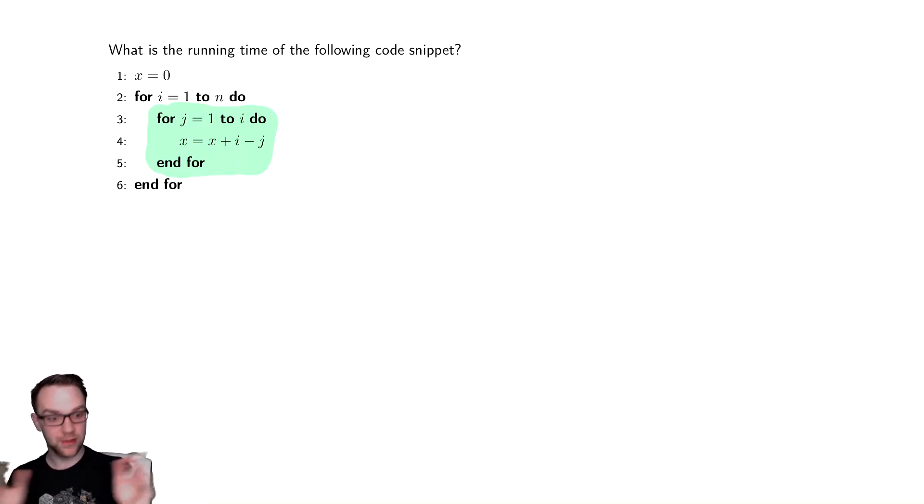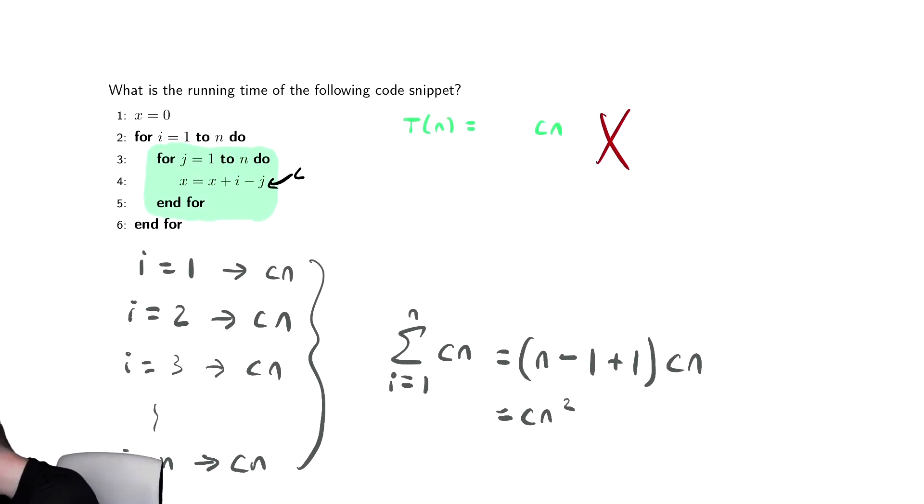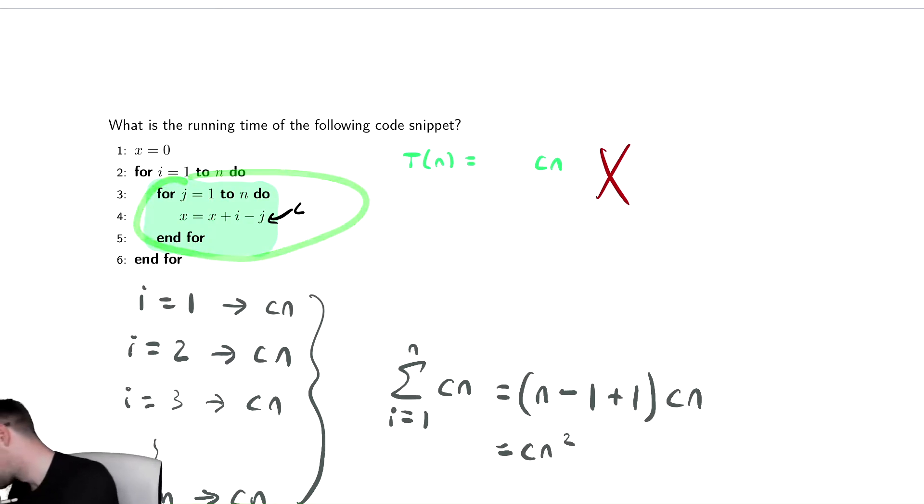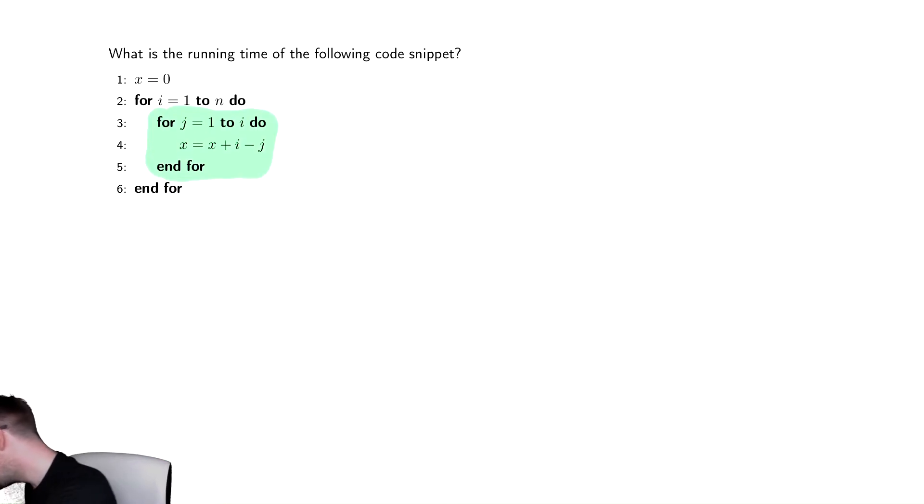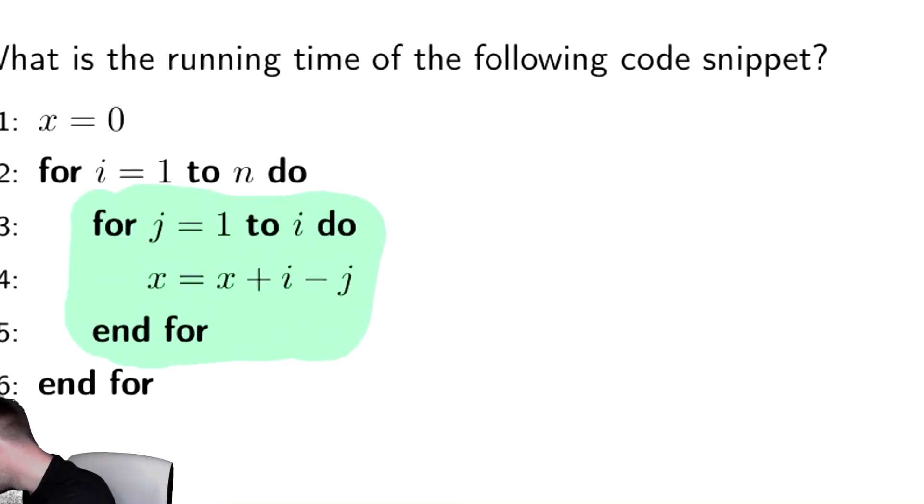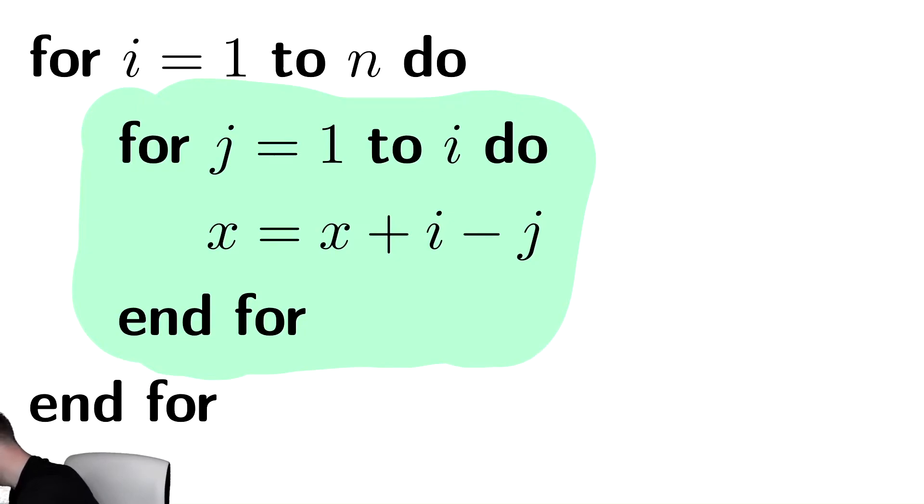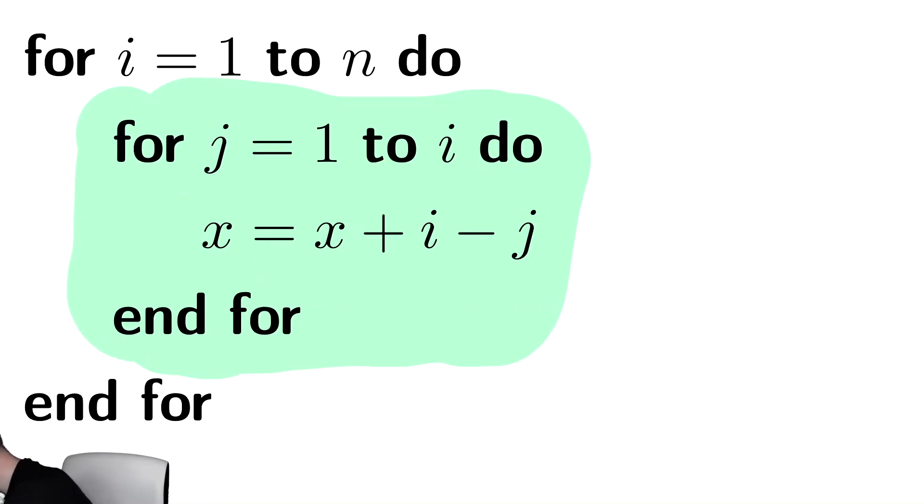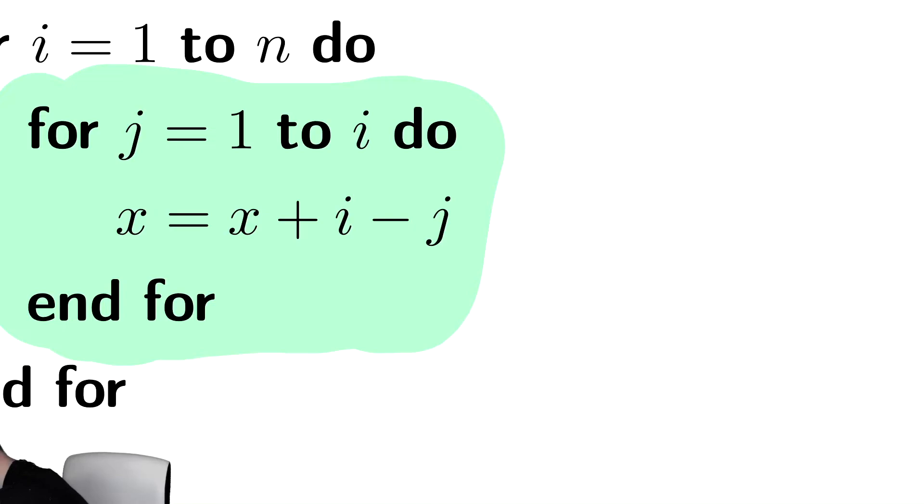But let's try and generalize what we're doing so that we can write it in as consistent of a way as possible. Before we knew that the body of the outer for loop took CN time. And then we added up that CN every single time. Here, if we zoom in, the body of the loop takes constant time. So I can write the running time of this mint code here as the sum from J equals one to I of C.